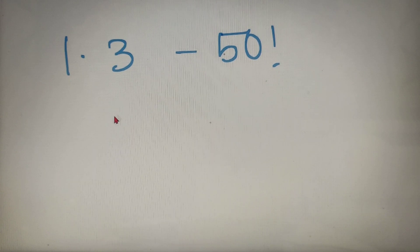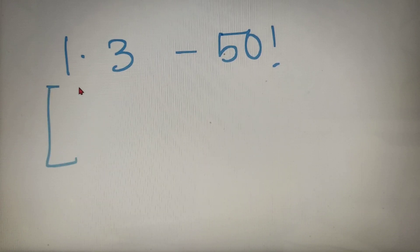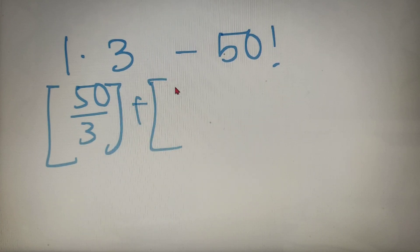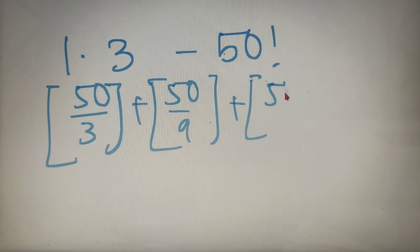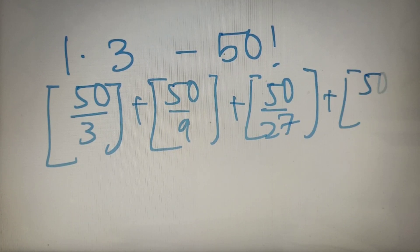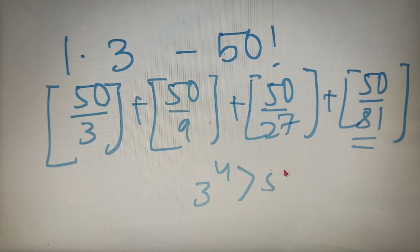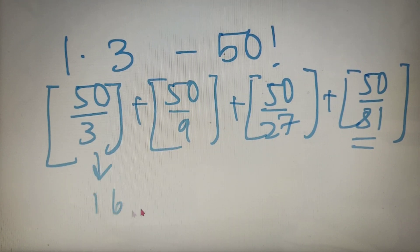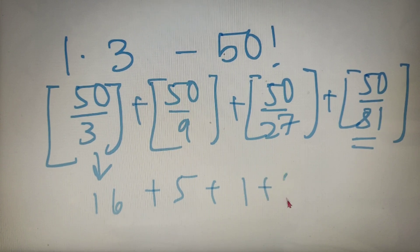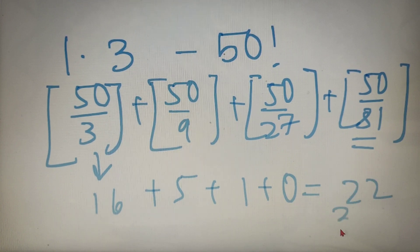For our first example, we have to find the highest power of 3 in 50 factorial. We substitute x = 50 and p = 3 into the formula: ⌊50/3⌋ + ⌊50/9⌋ + ⌊50/27⌋ + ⌊50/81⌋. We stop at 81 because 3⁴ = 81 is greater than 50. The values are 16 + 5 + 1 + 0 = 22. So the highest power of 3 in 50 factorial is 3²².